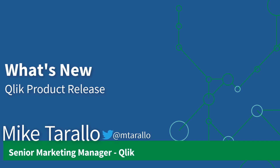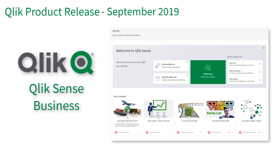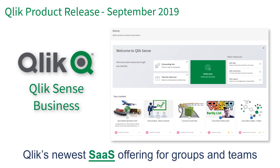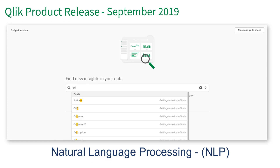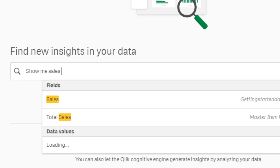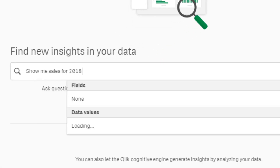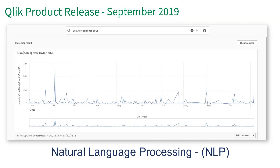Hey guys, this is Mike Tirallo with Qlik, and today I'm pleased to introduce you to Qlik's latest product release for September 2019. Our main highlight of the September release is Qlik Sense Business, our latest SaaS offering designed to empower groups and teams to make data-driven decisions. We're also proud to introduce our groundbreaking natural language processing capability in the Qlik Cognitive Engine that supports natural language search and interaction in Qlik Sense.